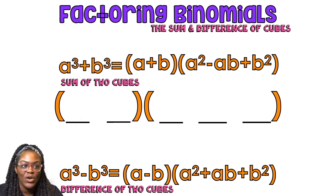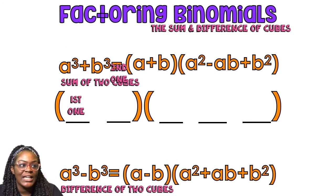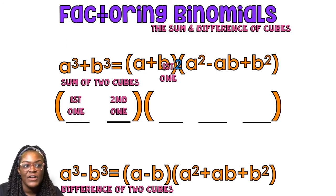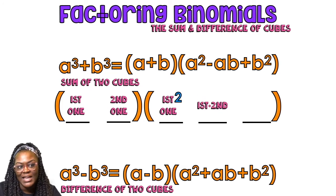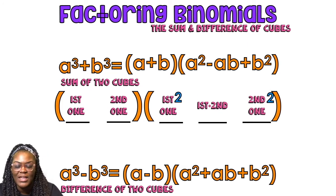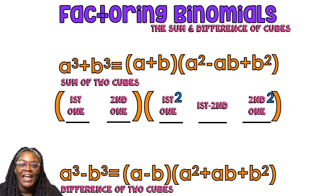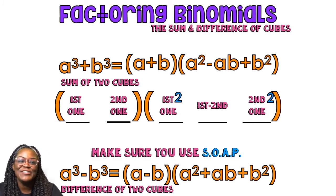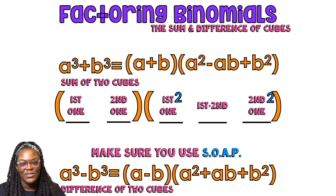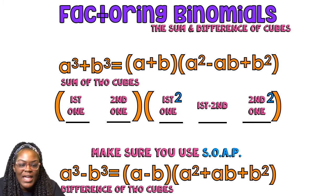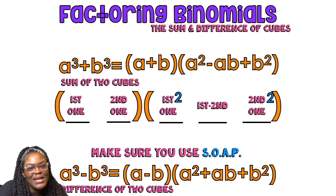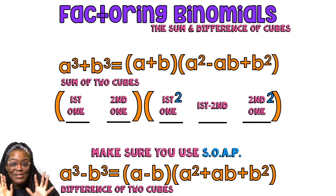So, the song goes: first one, second one, first one squared. First one times the second one, the second one squared. Make sure you use some soap! That's the whole thing. First one, second one, first one squared. First one times the second one, the second one squared. Use some soap!